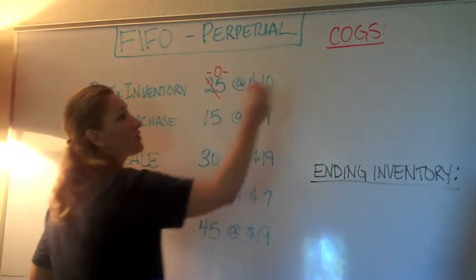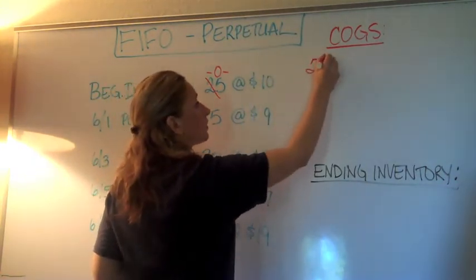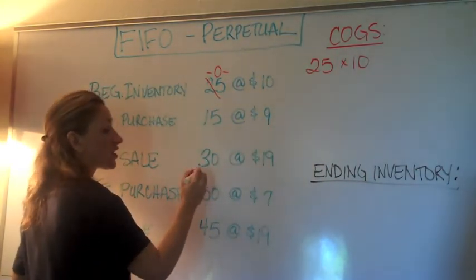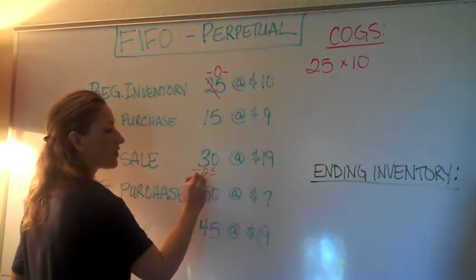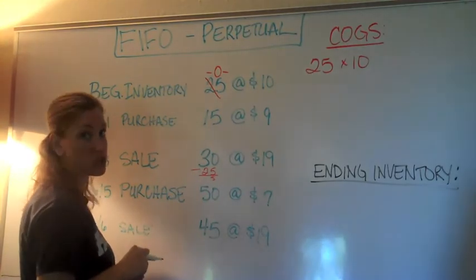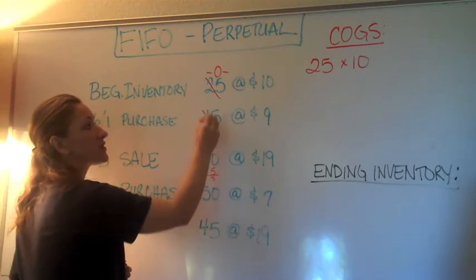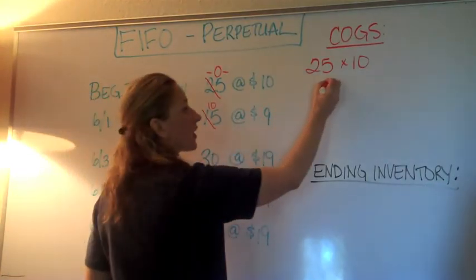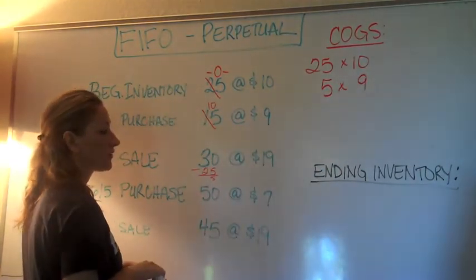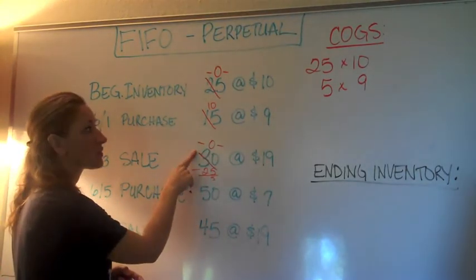We're going to use all 25 units from beginning inventory and move that cost over to our cost of goods sold section. Then, 30 minus 25 leaves us 5 more units needed. We take those 5 from the next purchase, bringing it from 15 down to 10, and put the 5 units and their associated cost over in cost of goods sold. Now this layer is zeroed out.